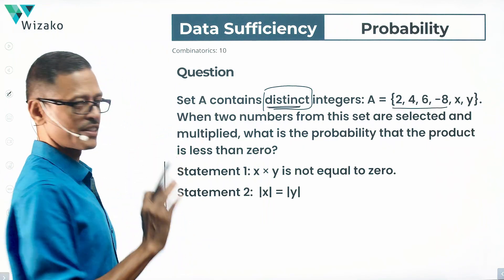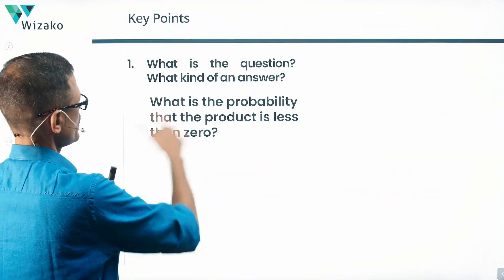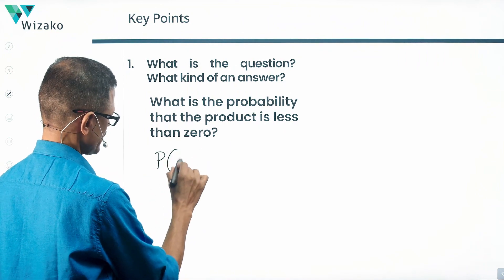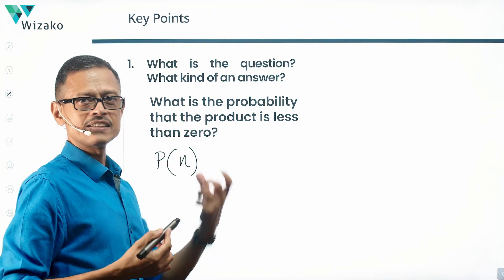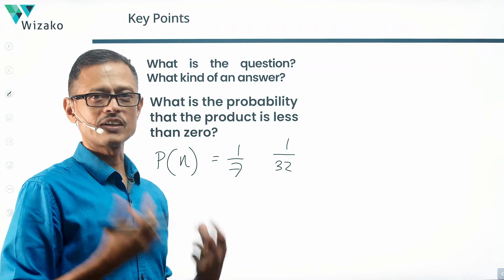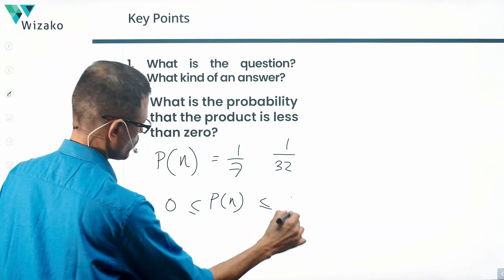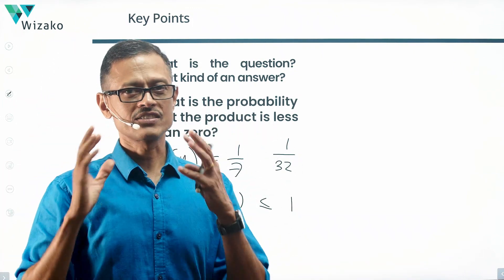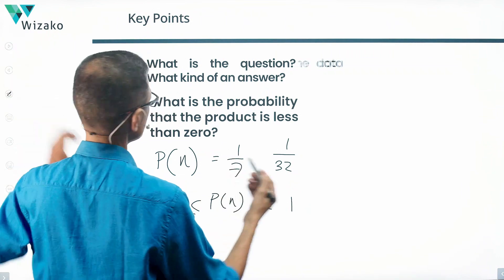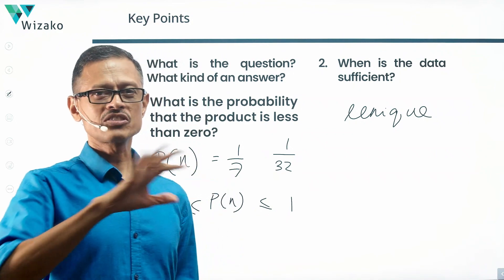Two statements are given. We have five answer options as familiar. The probability that the product is negative — we'll call it P(N) — will be some number like 1/7 or 1/32. Probability always takes values from zero to one, so if we get a unique value in that range, the answer to the question is available. The data is sufficient when we get one single unique value.